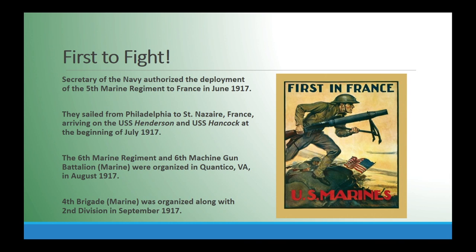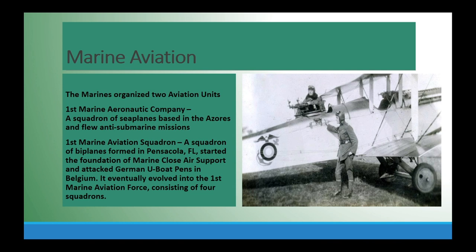The Fourth Brigade included the Fifth and Sixth Marine Regiments and the Sixth Machine Gun Battalion. Marine aviation also expanded, including the First Marine Aeronautical Company, which worked primarily with Navy aviation units in anti-submarine warfare. The First Marine Aviation Squadron grew from a single squadron to a force of four squadrons, which fought inland with the Second Division — and this is where the Marines began to develop their close air support capability, for which they became famous in subsequent wars.